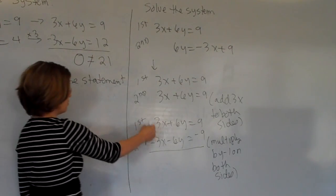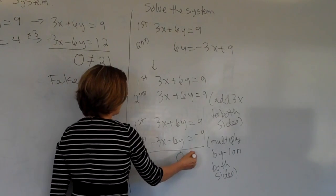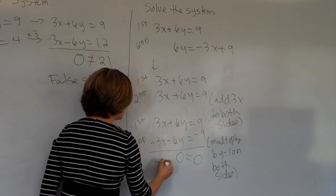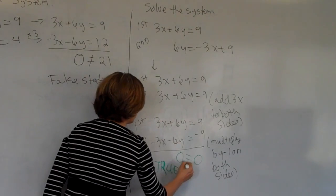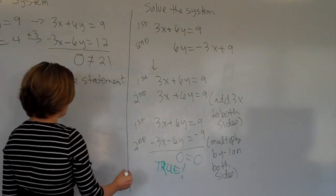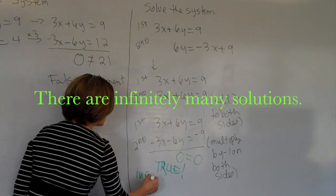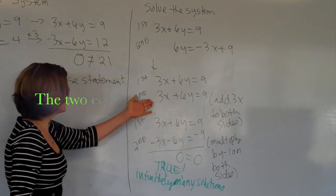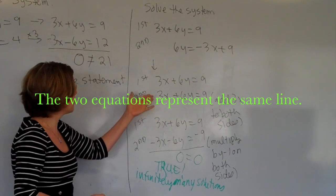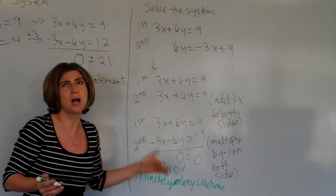I get 0x, I get 0y, and over here I get 0. That's a true statement. Whenever I get a true statement, then there are infinitely many solutions. These two lines are the same line, so any point on the top line is on the bottom line, since they are the same line.